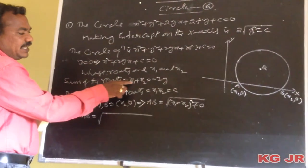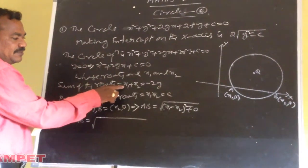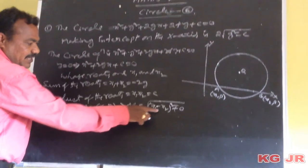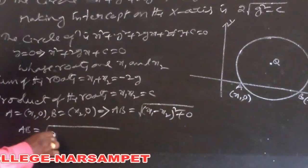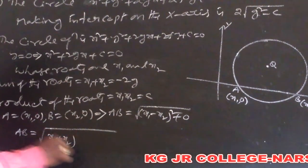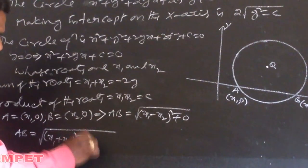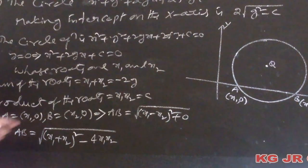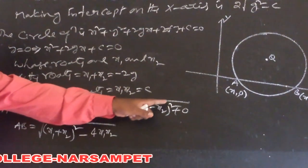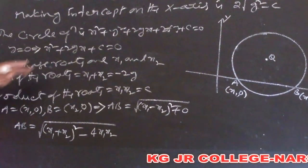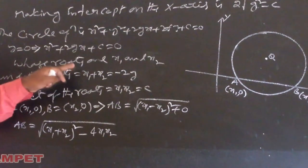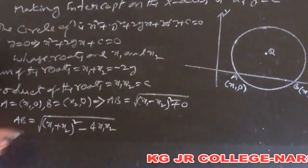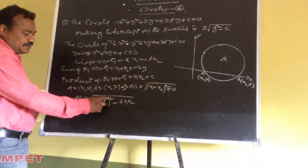We know that (x1 minus x2) whole square can be written in terms of x1 plus x2 and x1·x2. So, (x1 minus x2)² = (x1 plus x2)² minus 4·x1·x2.